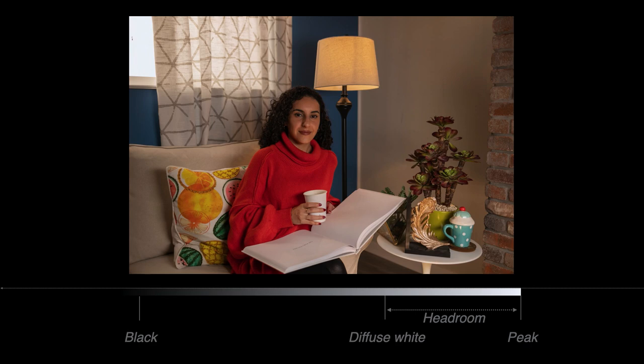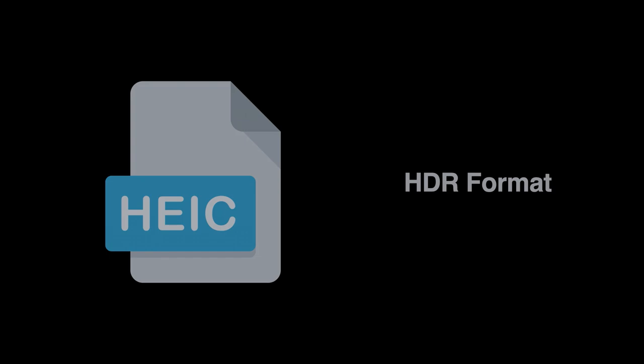In HDR, we use the added headroom to hold the highlight detail and adjust the rest of the range to look natural. Adjusting the range can make the image a little brighter overall, but this depends on many factors and can be much more complex compared to just turning up the brightness. Photography has yet to solve the HDR format problem—how do we reliably and predictably hold the extended range?